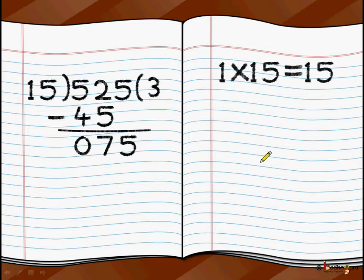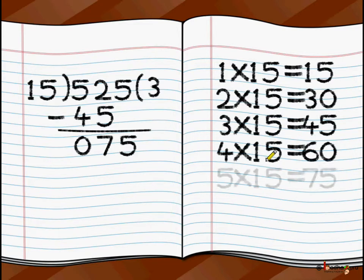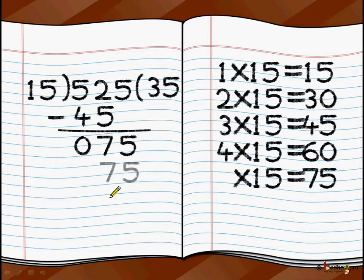So 1 times 15 is 15, 2 times 15 is 30, 3 times 15 is 45, 4 times 15 is 60, 5 times 15 is 75. Wow, 75 is equal to the number on the left side. So we stop here and 5 from this side goes in the quotient place and the 75 which is here goes here.